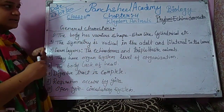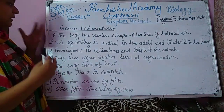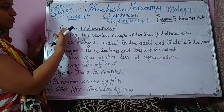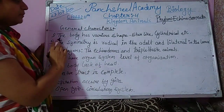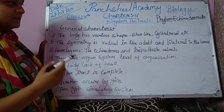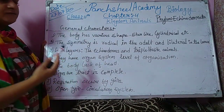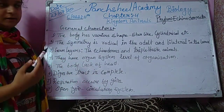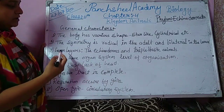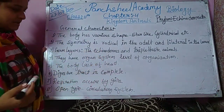Today we are discussing about Echinodermata. Echinodermata shows some general characters. The body has various shapes — star-like, cylindrical, etc. The symmetry is radial in adult and bilateral in larva. Regarding germ layers, Echinodermata are triploblast animals.